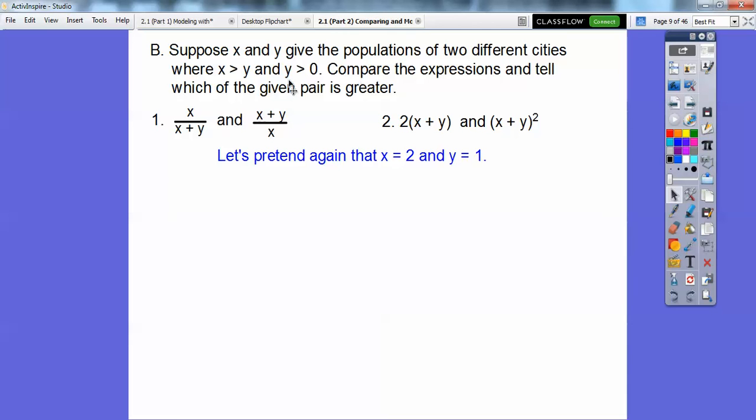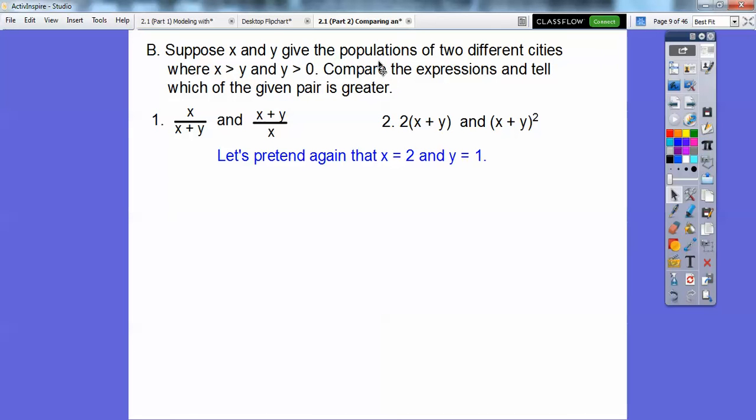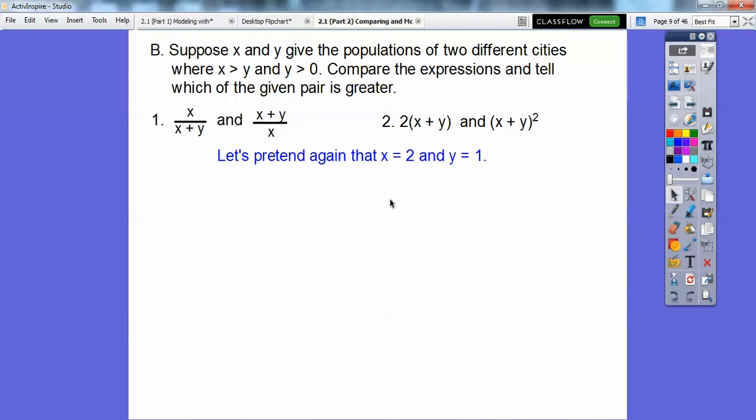Same thing. They're going to ask you to do the same thing with these two. Same directions and everything. Again, since X is greater than Y, now this is just to trick you a little bit. Y is greater than zero. It says X and Y are populations of the two different cities. Well, you can't have zero people in a city. Otherwise, it wouldn't be a city. So that's all this means, it's just bigger than zero. So X is greater than Y. So I'll let two and one again be X and Y.